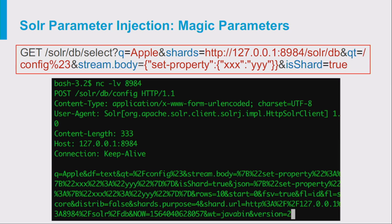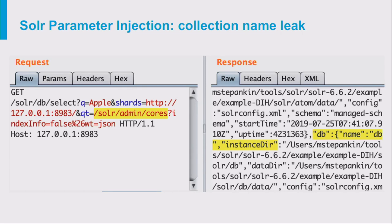Since we can fully control the request URI and request path in the Qt parameter, we can override almost all internal parameters applied to the request body. When trying to exploit this SSRF vulnerability, we need to know the internal URL to use in the shards parameter. The best target for this SSRF is Solr itself, because as mentioned before, it's completely stateless and doesn't require any authentication — making it a perfect SSRF target.